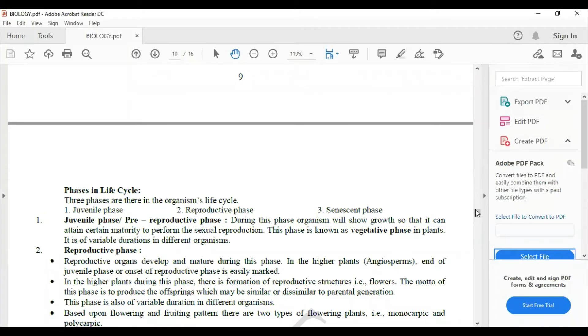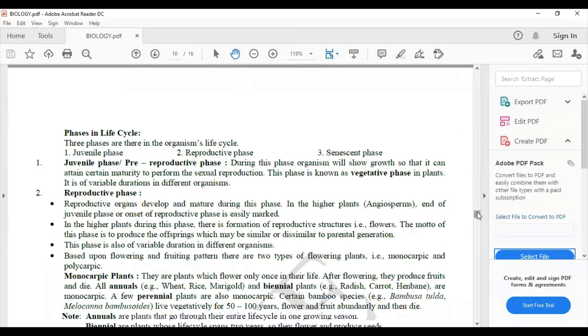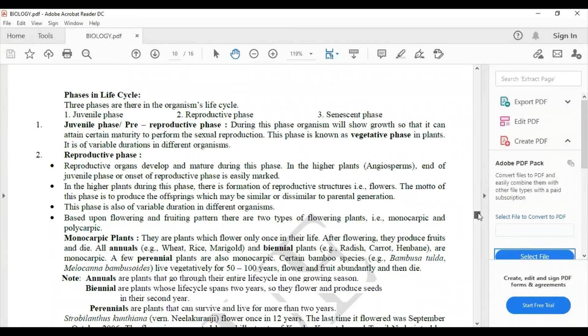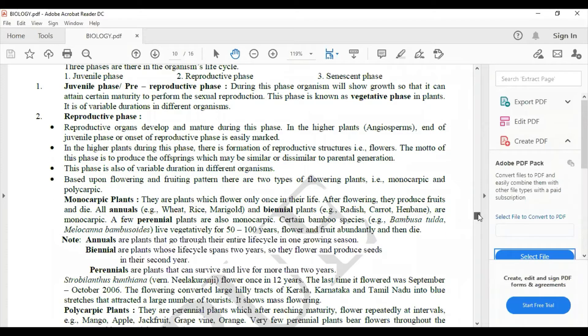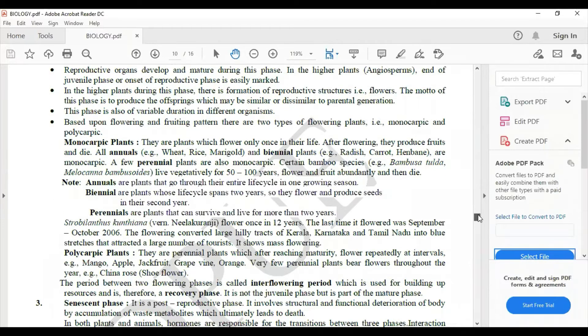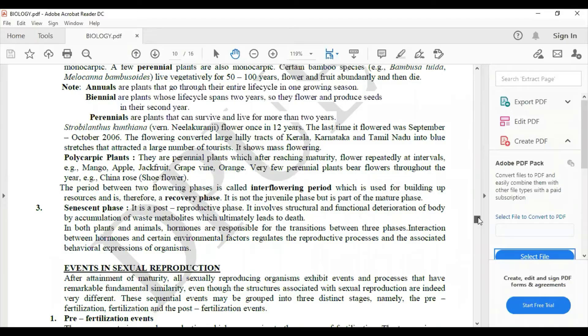Phases in life cycle, that is juvenile phase, reproductive phase, monocarpic plant under reproductive phase, polycarpic plants again under reproductive phase, then the third phase is senescent phase.